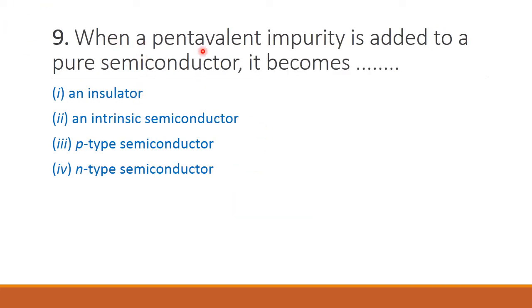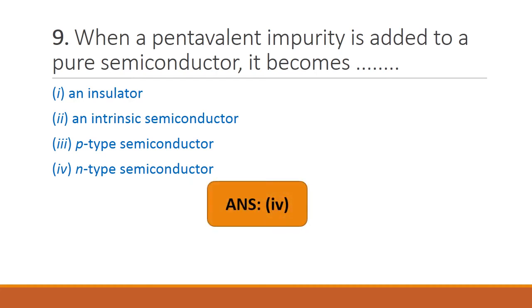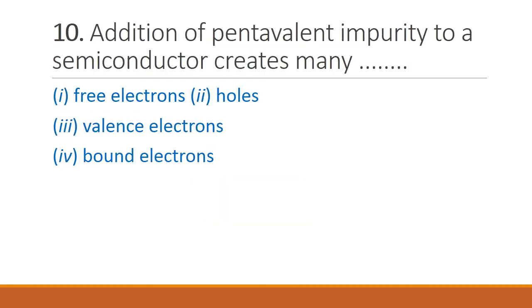Next question: when a pentavalent impurity is added to a pure semiconductor, it becomes — penta means 5-valent impurity, so adding it makes the semiconductor an N-type semiconductor. Therefore option 4 is the right answer. Next question: addition of pentavalent impurity to a semiconductor creates — free electrons, holes, valence electrons, or bound electrons. Since pentavalent means 5 valence electrons and our semiconductor has 4, there is an excess of electrons. Therefore option 1, free electrons, is the right answer.